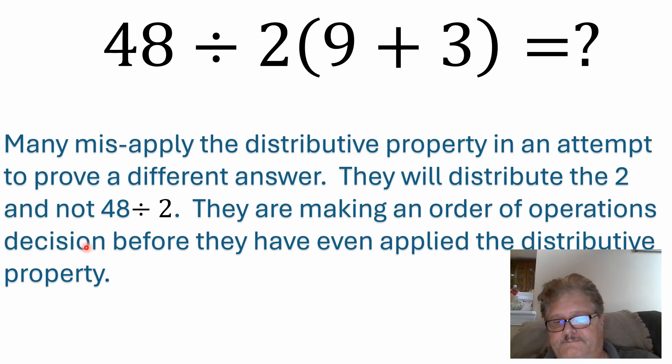Now, I see a lot of people have answered problems similar to this, a lot of viral problems. And they try to show the distributive property and they try to show why the distributive property gives a different answer. But what they're not realizing is they're misapplying the distributive property, trying to make an argument about the order of operations using the distributive property. The thing that we're looking at here is they say that you distribute the 2 and not the 48 divided by 2. So what they're doing is they're making a decision about the order of operations before they've even applied the distributive property. The best way I could describe that would be like putting the cart before the horse.